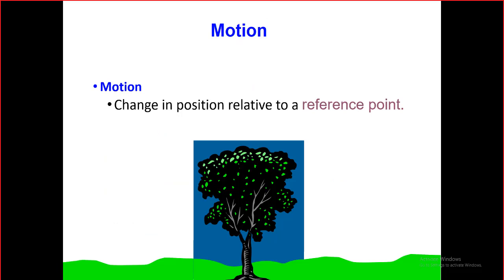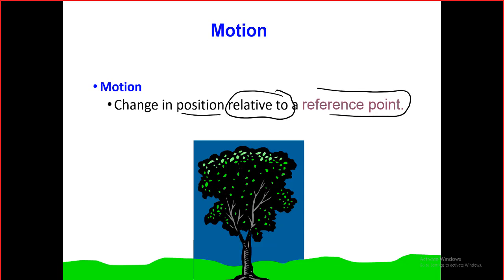We have a very simple definition. Motion: if the object is going to move, it has to change its position relative to a reference point. That's the reference point we are talking about — this is the first thing we're going to use. Number one: we need a reference point.